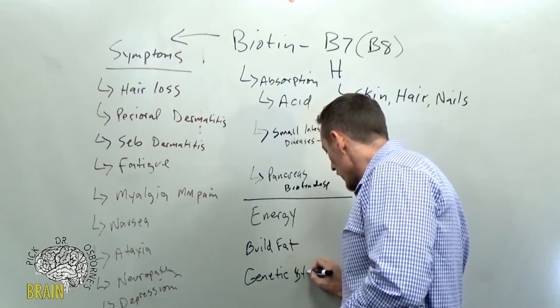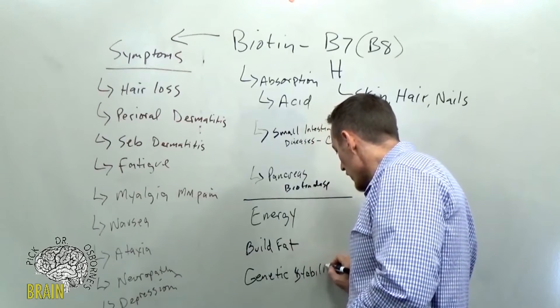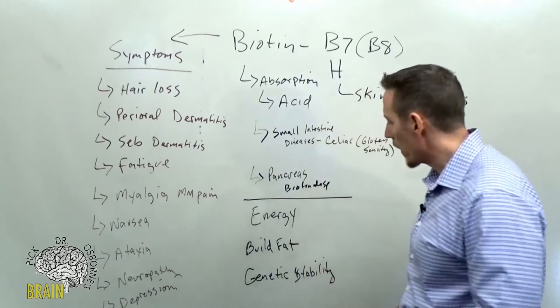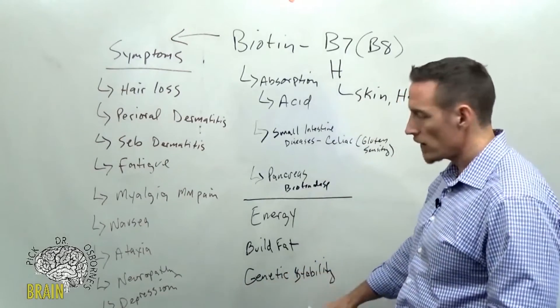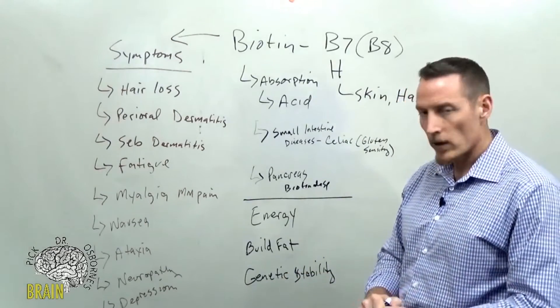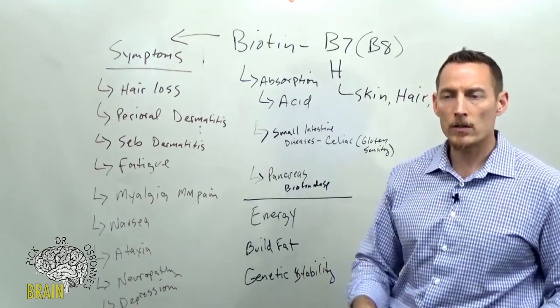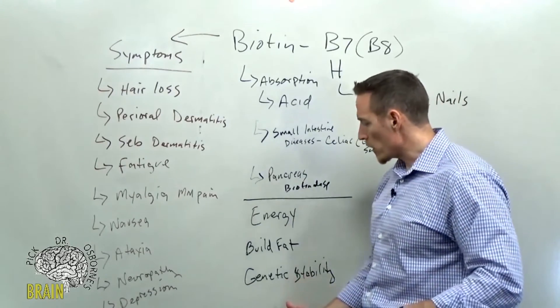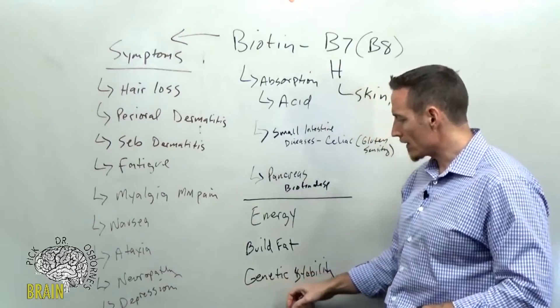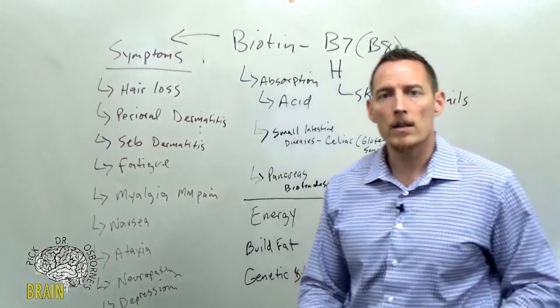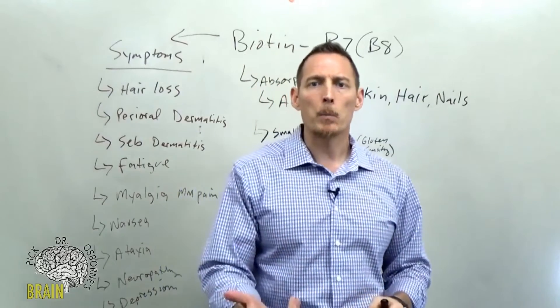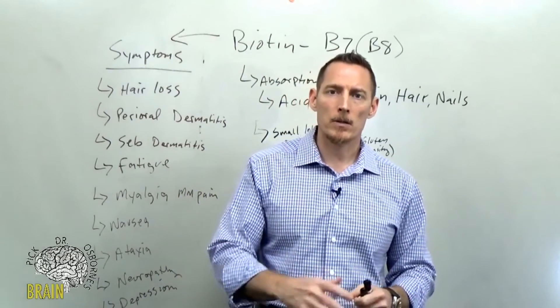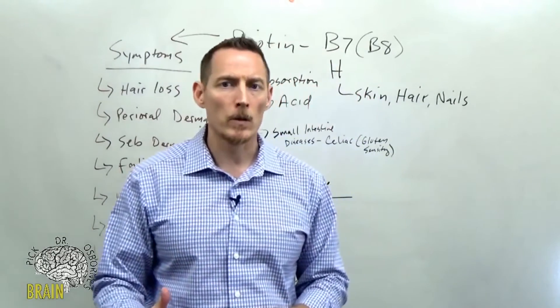It also helps to stabilize genetic integrity. This is one of the newer discoveries around biotin. So genetic stability—we're going to learn more about this in the next probably 10 years or so as technology advances. But there are areas being recognized that biotin is taken up into, and these areas are genetic areas called histones.